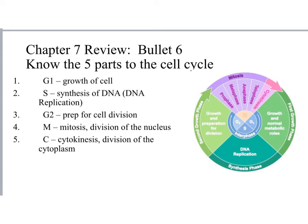Know the five parts of the cell cycle: G1 — cell growth; S phase — DNA replication along with other cell materials; G2 — preparation for cell division; mitosis — division of the nucleus, broken into prophase, metaphase, anaphase, and telophase; and cytokinesis — division of the cytoplasm to produce completely separated new cells.